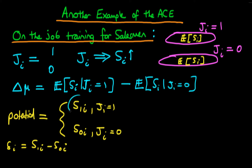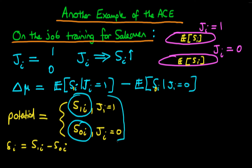What we're really interested in is, for that particular candidate, what is the difference between S1i and S0i — this represents the causal effect of on-the-job training. The problem is that in reality we only observe one of these two outcomes: we observe S1i if the candidate chose on-the-job training, and S0i if they didn't. So we can look at our expression for delta mu and rewrite the first part as the expected value of S1i, and the second part as the expected value of S0i given that Ji equals zero. Working on this expression will give us both the average causal effect and the selection bias effect.